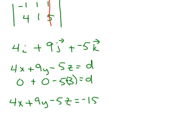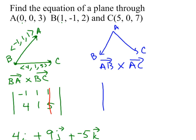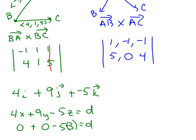To show it doesn't matter which vectors you choose, let me instead use AB cross AC. Vector AB is the opposite direction of BA, so going from A to B is ⟨1, −1, −1⟩. And from A to C: forward five, zero in j, and from three to seven is four — so AC is ⟨5, 0, 4⟩. When I do the cross product using determinants, the i component is negative four minus zero, giving −4 in the i direction.